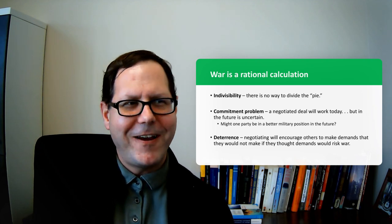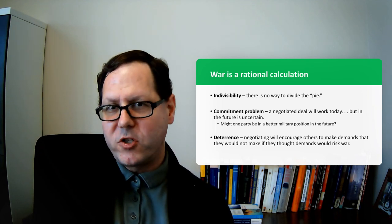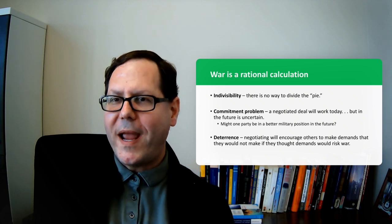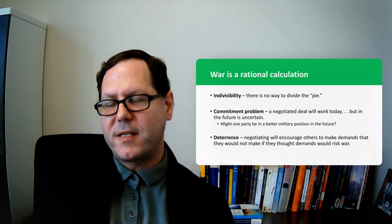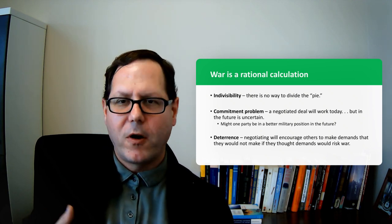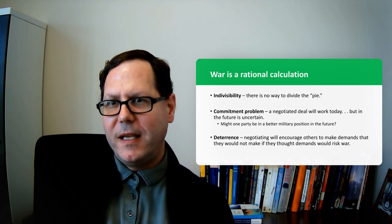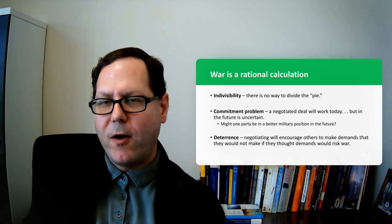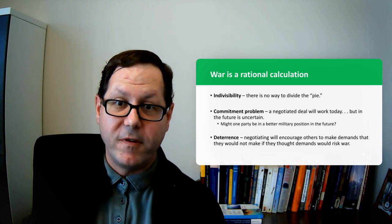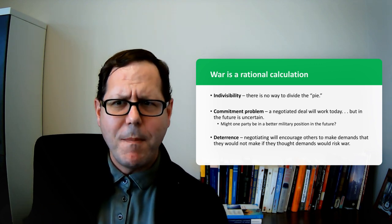Hitler was doing the calculation of, I could wait until conditions favor me a little bit better, or I could strike now, or I could wait and the conditions would not favor me as well as now. The Soviet Union will be stronger, I'm better off fighting now, even though we had just cut a deal, than I would be to wait and hope that the Soviet Union honors that deal in the future. So that's a commitment problem.